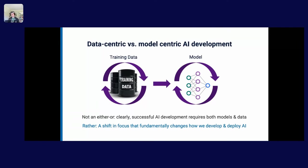This really does fundamentally change how we formalize the development process and how we think about developing and deploying AI. Another way to put it: pull a random company or team doing AI today and ask them where they're spending their time. In the model-centric world, 99% of the time they'd say finding the right features or building the right model architecture. Today, a large proportion are stuck on the data — labeling it or waiting for it to get labeled. This is what we mean by this broad shift, and it opens up fascinating questions about how to support AI development today.